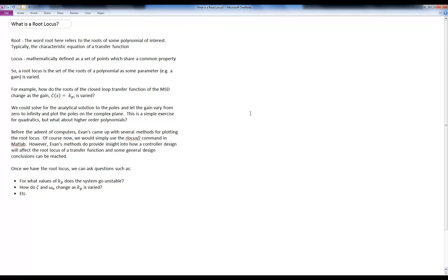For example, we could ask the question, how do the roots of the closed loop transfer function of the mass on a spring with some damping change as the gain, say from the control law C of s is equal to kp, is varied.